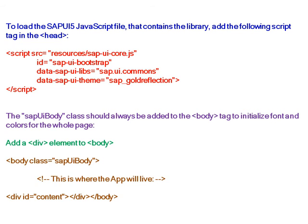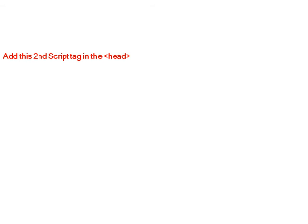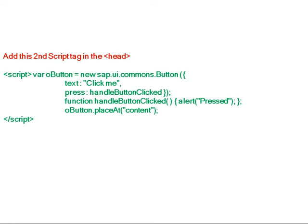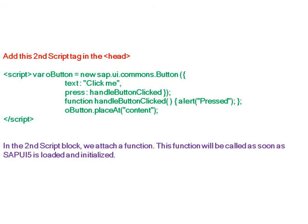The SAP UI5 body class should always be added to the body tag to initialize font and colors for the whole page. Add a new element to the body. In the second script tag in the head, we mention the application which we are going to create. In this example we have created a new button, and in the second script block we attach a function — this function will be called as soon as SAP UI5 is loaded and initialized.